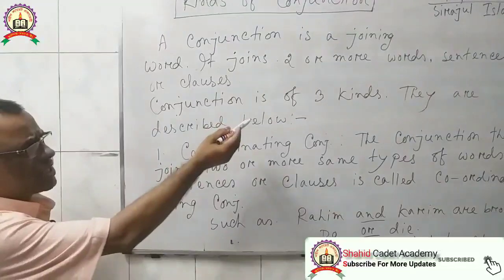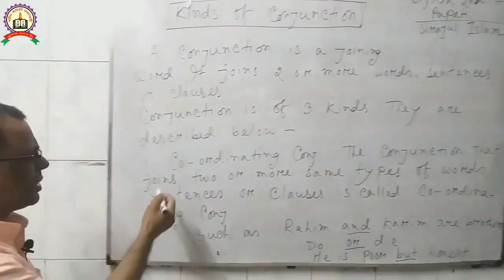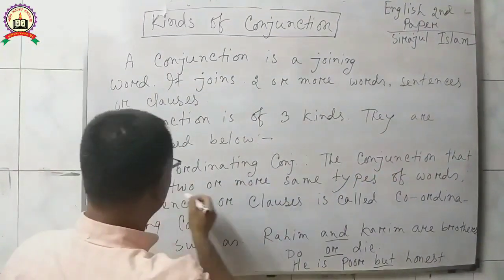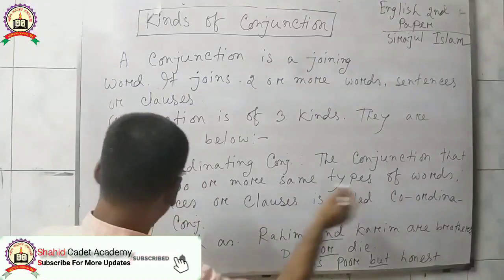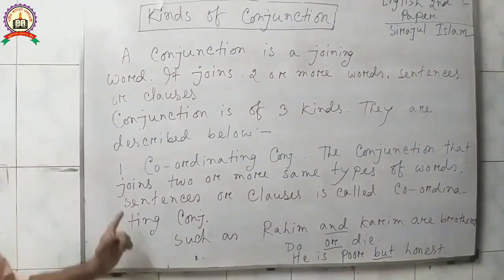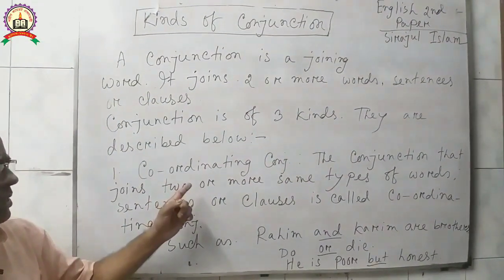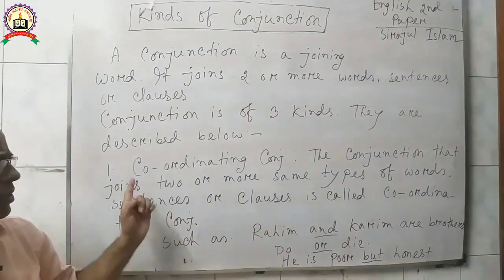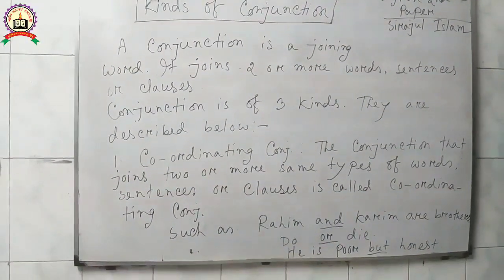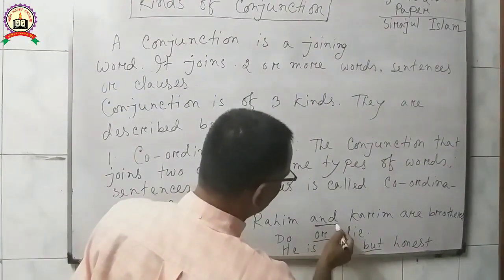Conjunction is of three kinds, as described below. Number one: coordinating conjunction. The conjunction that joins two or more same types of words, sentences, or clauses is called a coordinating conjunction.